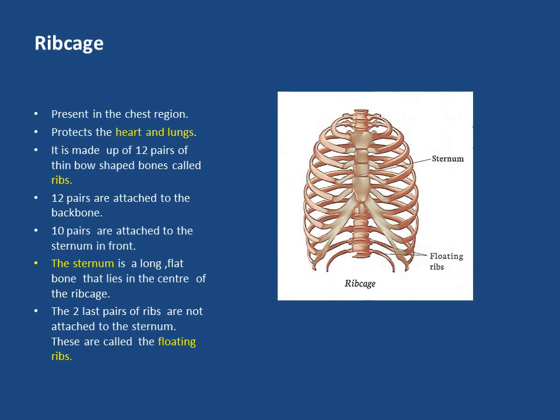The ribcage is a bony structure present in the chest region. It encloses and protects the heart and the lungs. It is made up of 12 pairs of thin bow-shaped bones called ribs. All 12 pairs are attached to the backbone, but only 10 pairs are attached to the sternum in front. The sternum is a long flat bone that lies in the center of the ribcage. The remaining two last pairs are not attached to the sternum and are called the floating ribs.